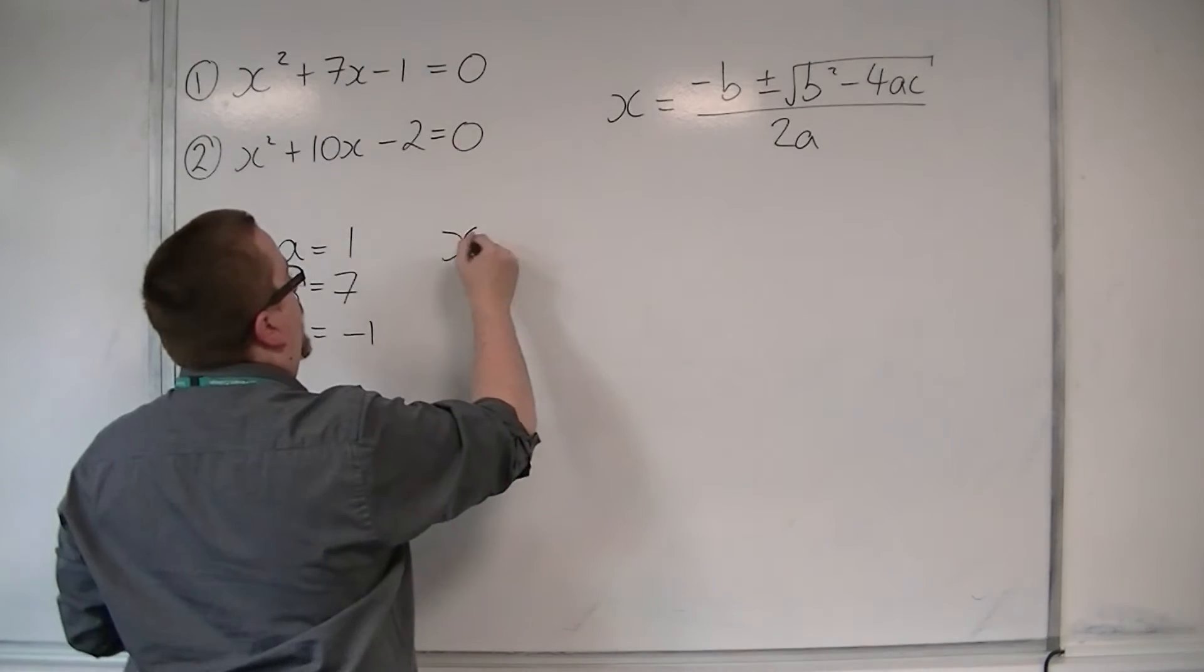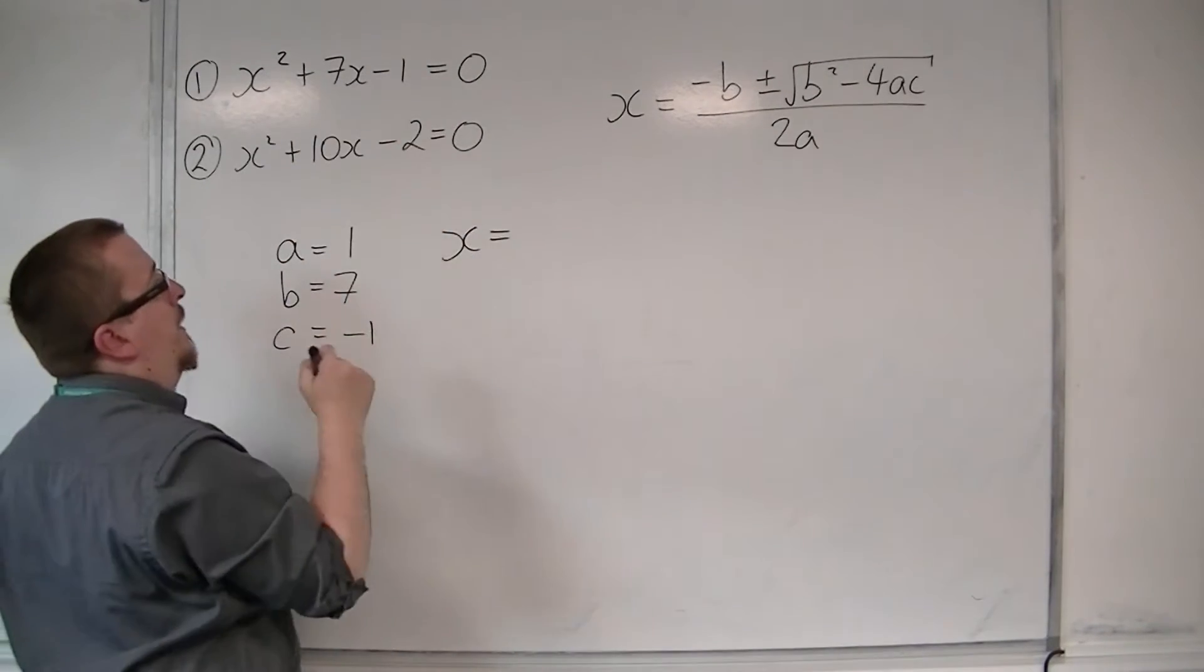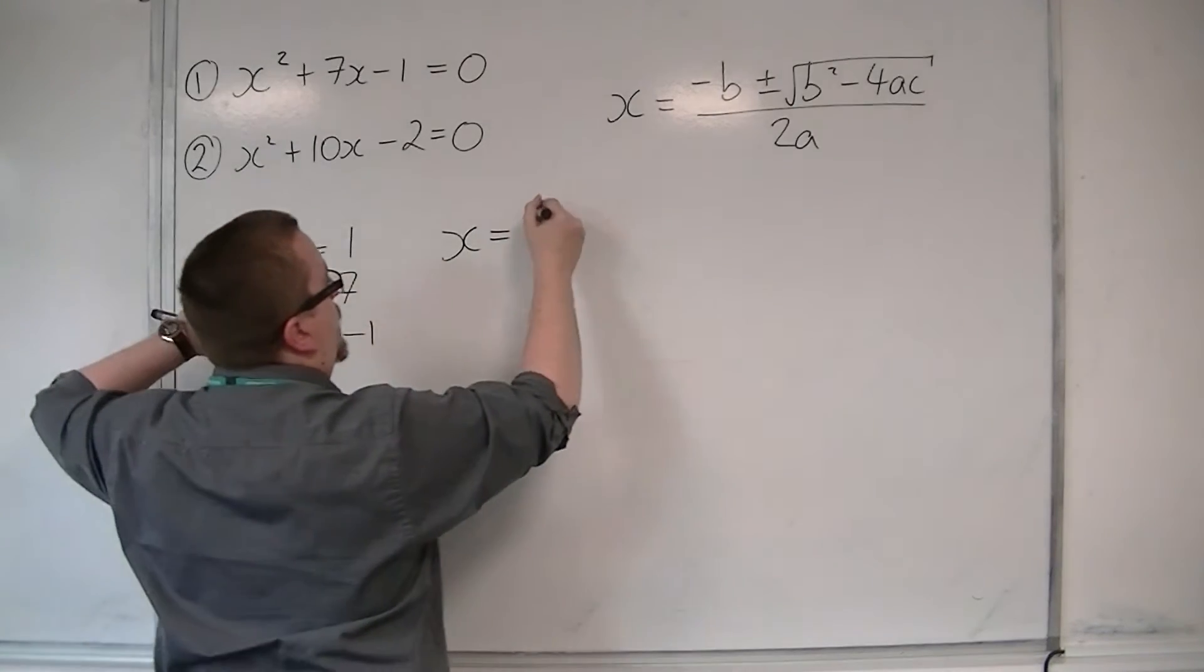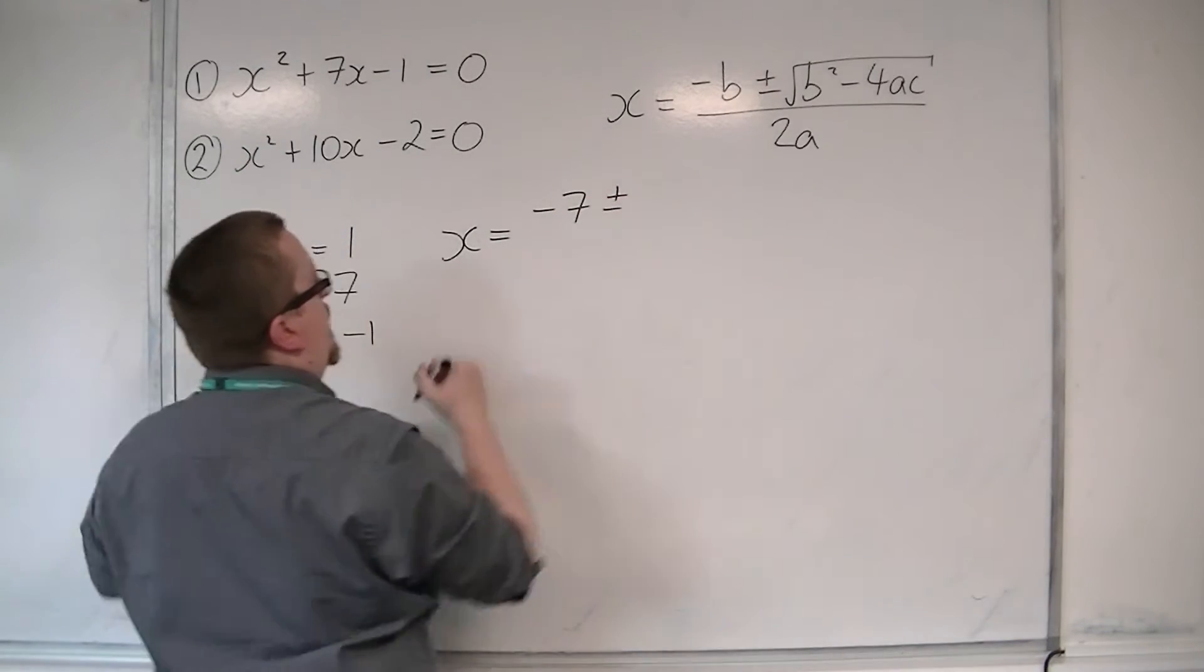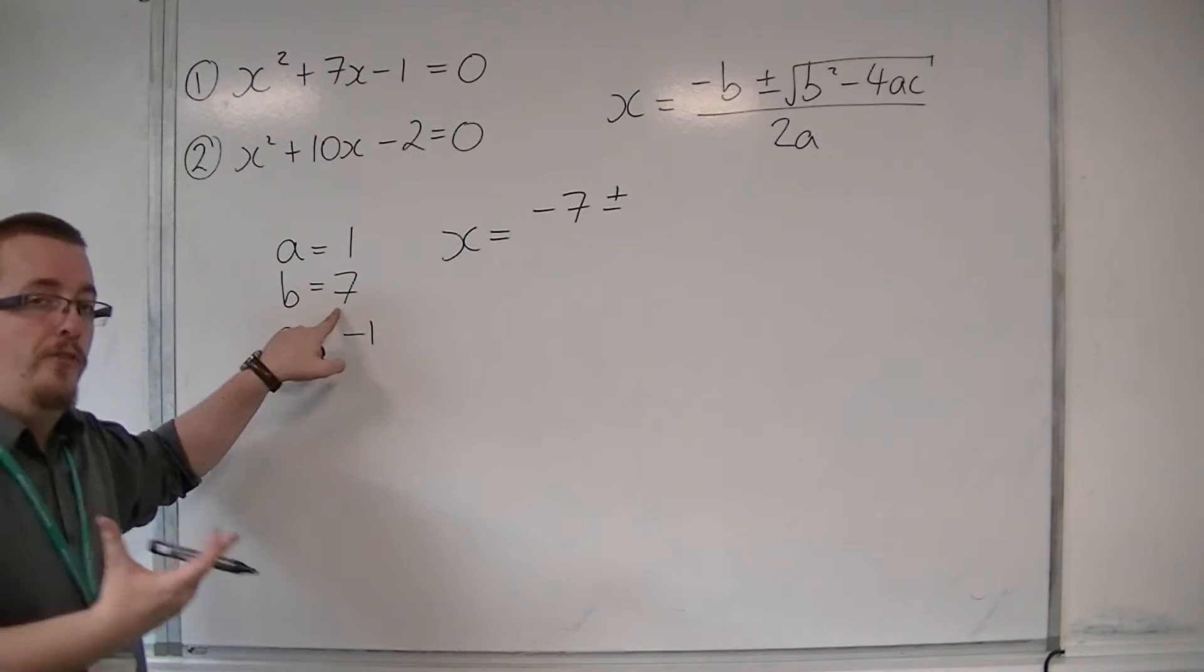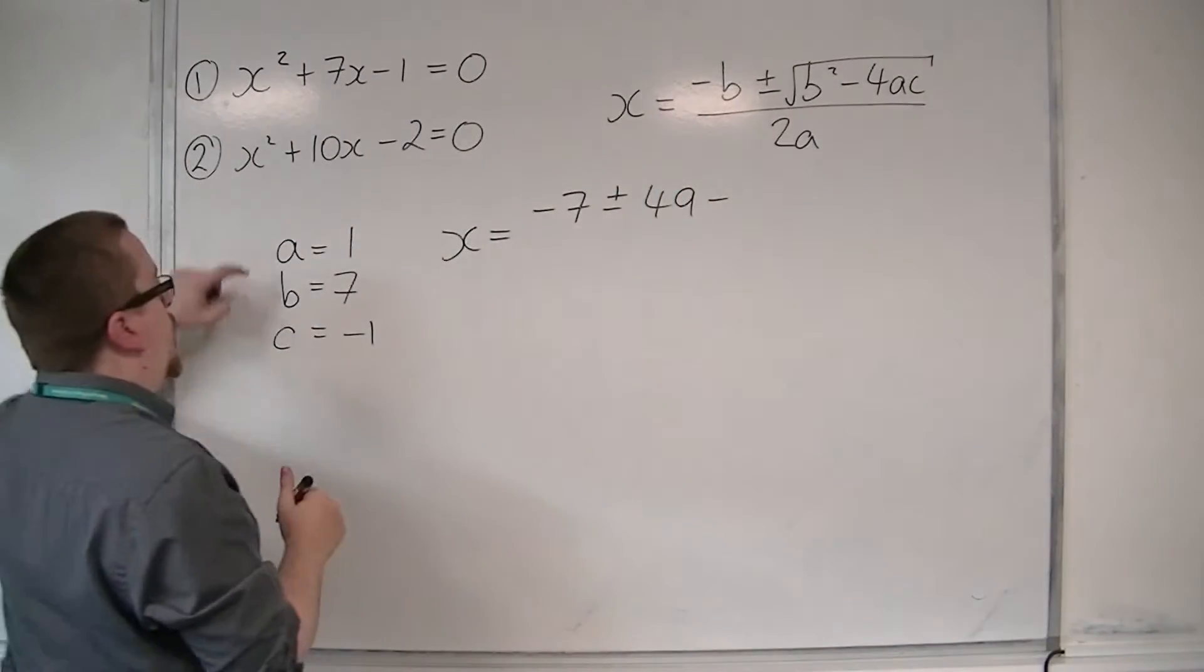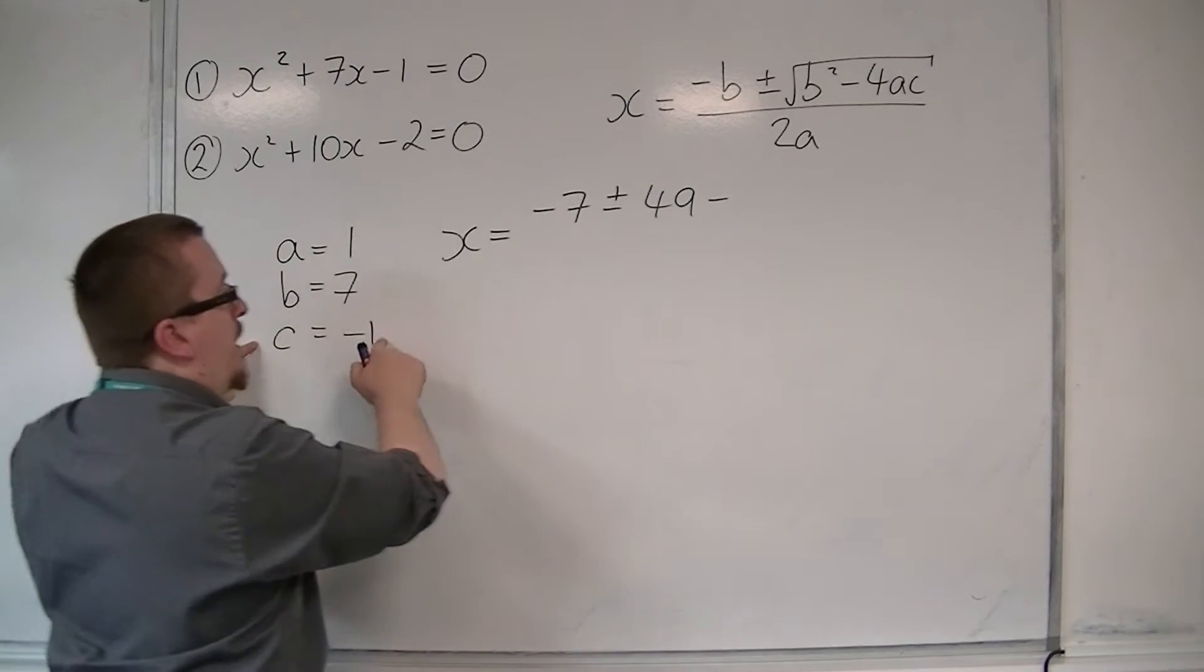So in solving the first equation, we have x is equal to minus b, so minus 7, plus or minus b squared, which is 49, minus 4 times 1 times minus 1.